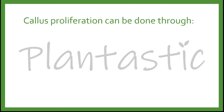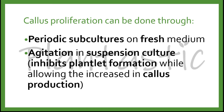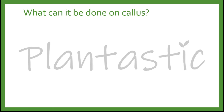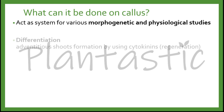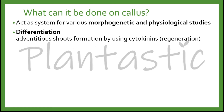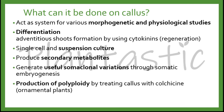Callous proliferation can be done through periodic subculture on fresh medium, or agitation in suspension culture, which inhibits plantlet formation while allowing an increase in callous production — which will be discussed in detail in another video. The applications of callous include: acting as a system for various morphogenetic and physiological studies; differentiating adventitious shoot formation using cytokinin through regeneration; single-cell and suspension culture to produce secondary metabolites; generating somaclonal variation through somatic embryogenesis; production of polyploidy by treating the callous with colchicine, commonly used in ornamental plants; and as material for protoplast isolation and fusion.